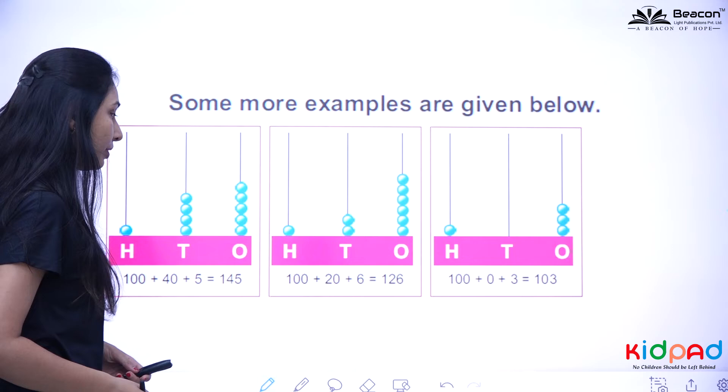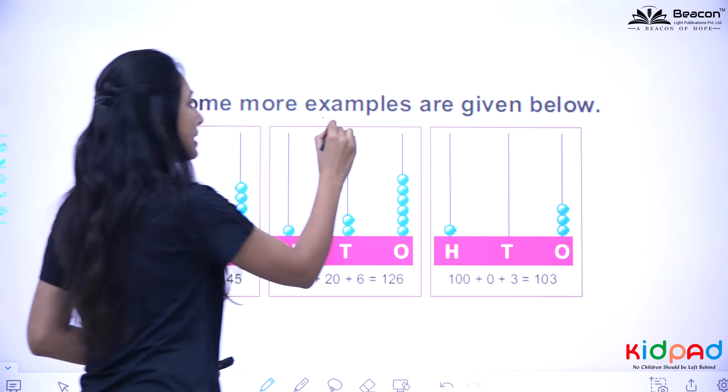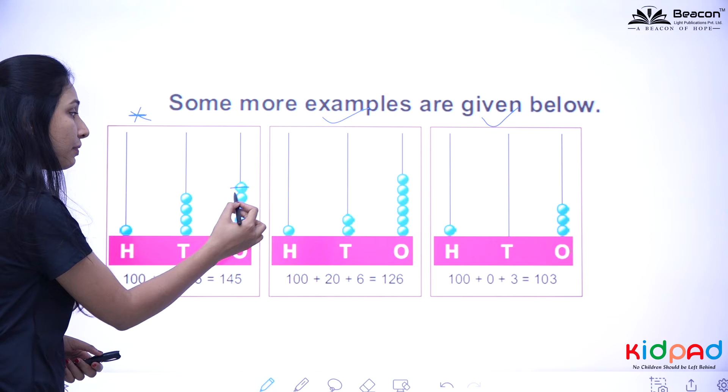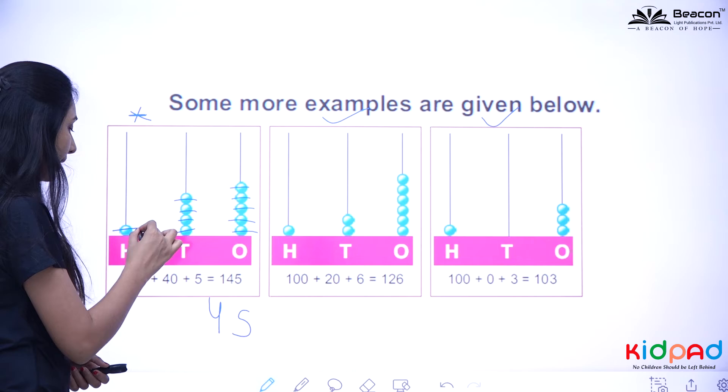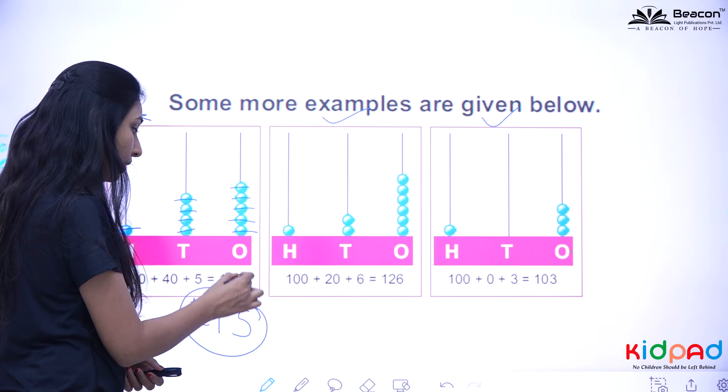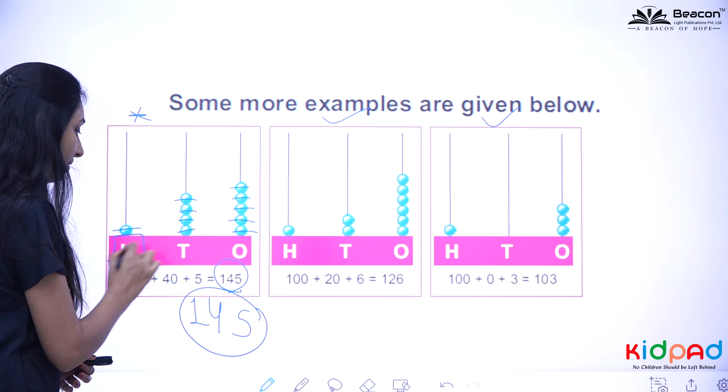Some more examples are given below. We are going to discuss this example and these are your homework. You are going to look at it by yourself. Here we have 1, 2, 3, 4, or 5 blocks. So you are getting a 5 here. 1, 2, 3, 4. So you have 4 beats. That is 145. Look in the book. You are getting 145.